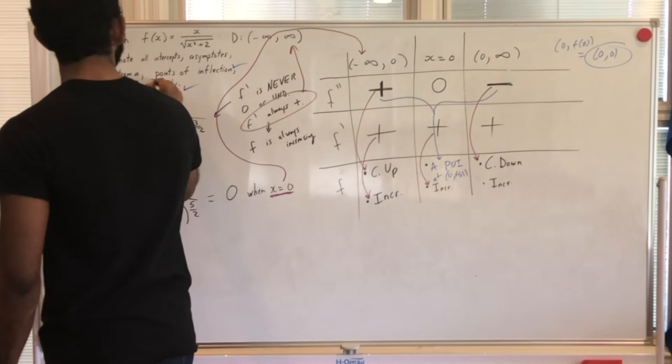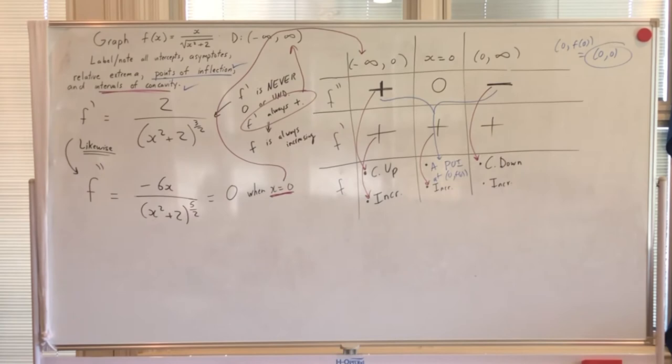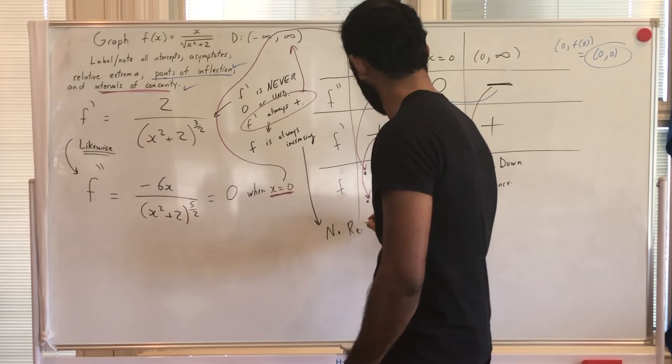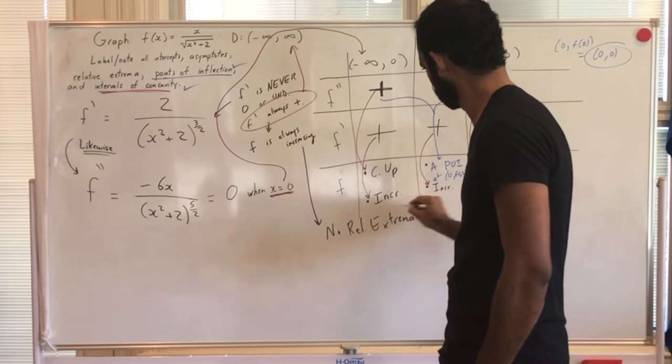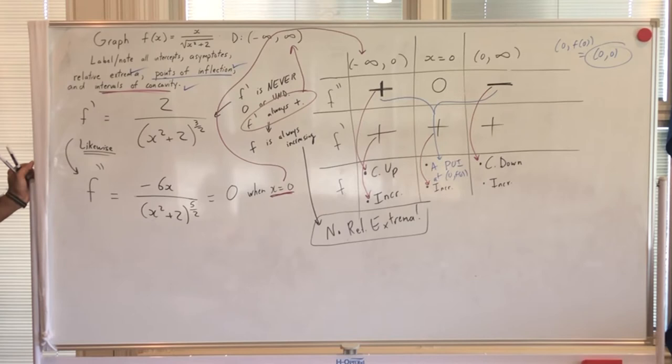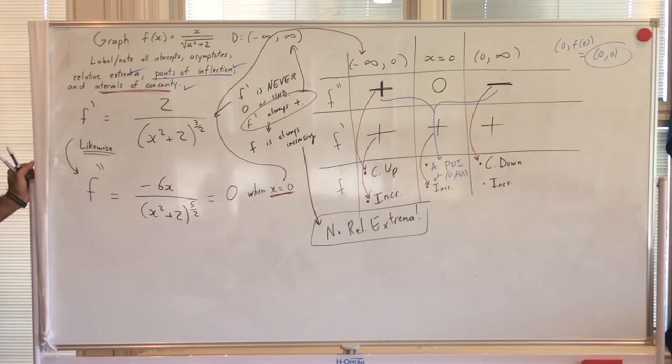We have a POI at (0, 0) — which is also the x and y intercept. There are no relative extrema since f' is always positive and never zero or undefined. We are done with all of our calculus knowledge.